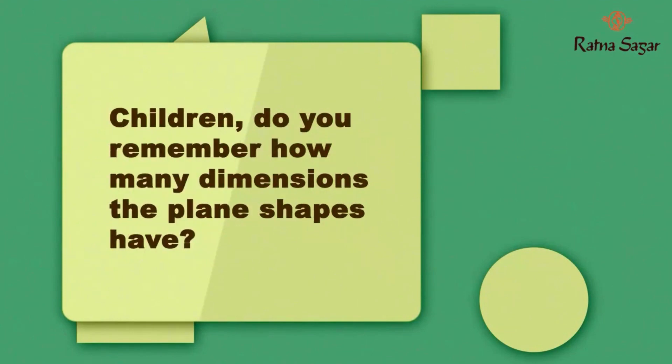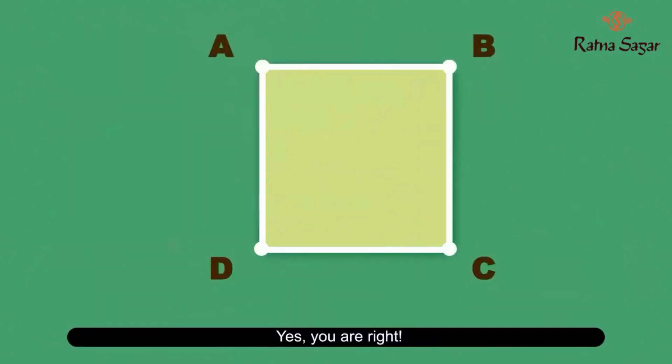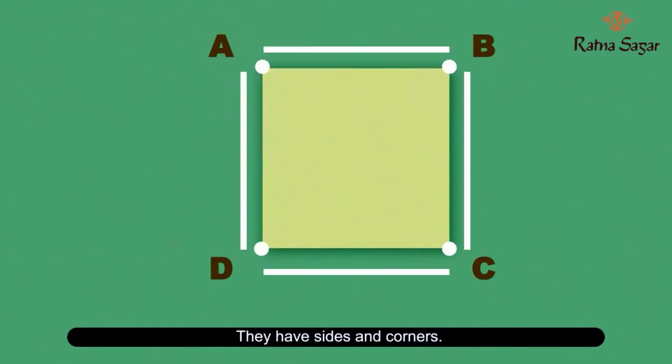Children, do you remember how many dimensions plane shapes have? Yes, you're right! Plane shapes have only length and breadth. They have sides and corners.